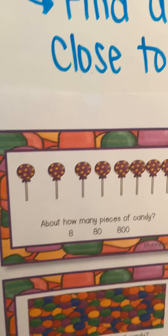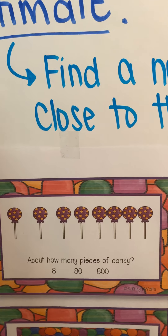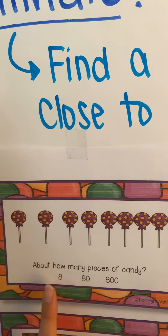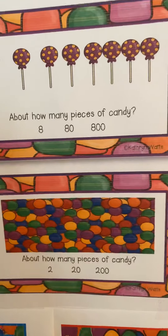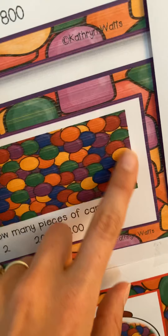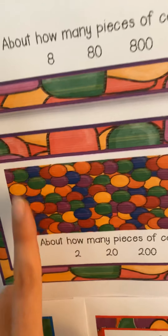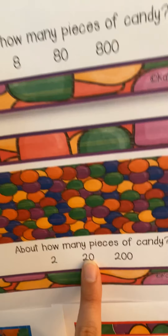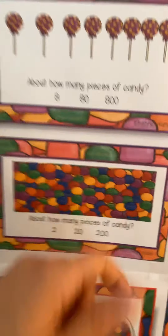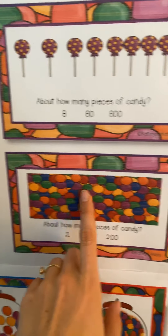Let's look at the lollipops. About how many pieces of candy? Eight, eighty, or eight hundred? Eight pieces of candy is correct. Now let's look at the jelly beans below — wow, you can't even see all of them. Some are buried. It looks very crowded. I know it's way more than two — I see two just right there. I even think this is way more than twenty. I think the reasonable guess for this would be two hundred. Do you agree? Thumbs up? That's close to two hundred — there are so many buried under there.